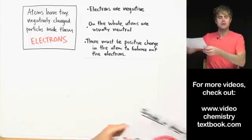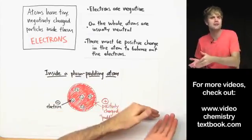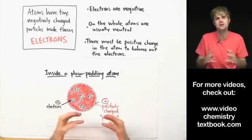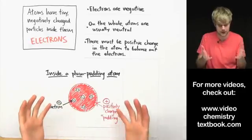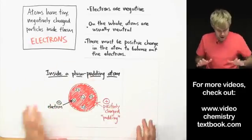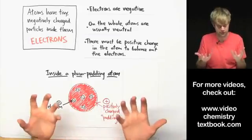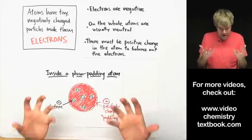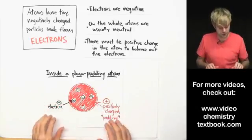So, he comes up with a model that he calls the plum pudding atom. Now, plum pudding is kind of a British thing. So, if you're American, it might be better for you to think about this as like the blueberry muffin model. And here's how it works. Thompson imagines that the atom is like a blueberry muffin and that electrons are stuck in this atom the way blueberries are stuck in a blueberry muffin.